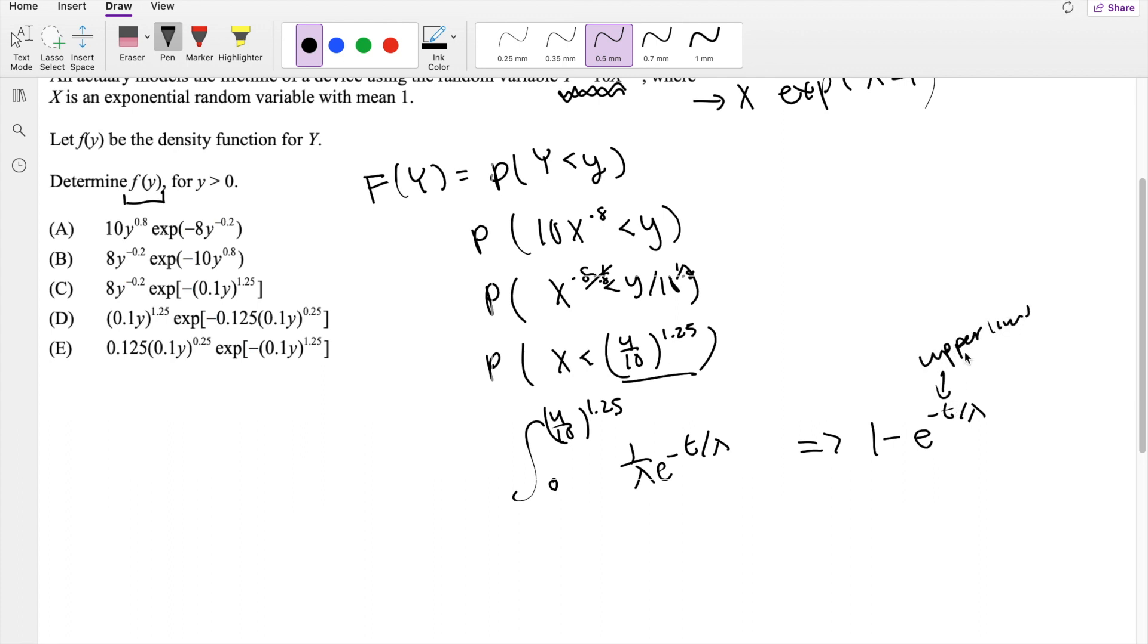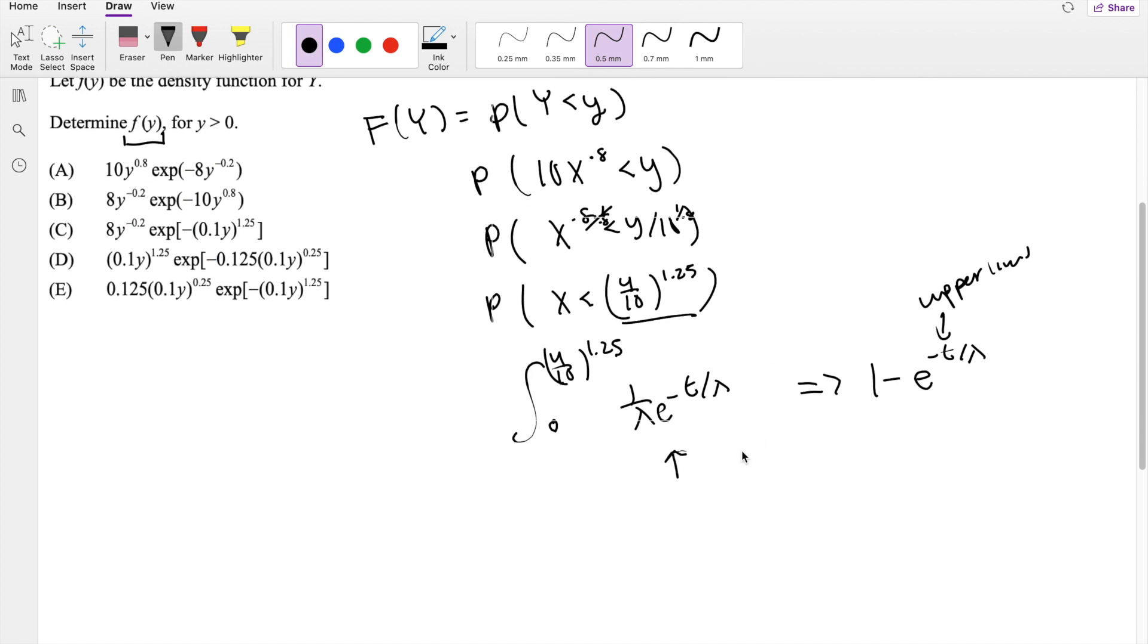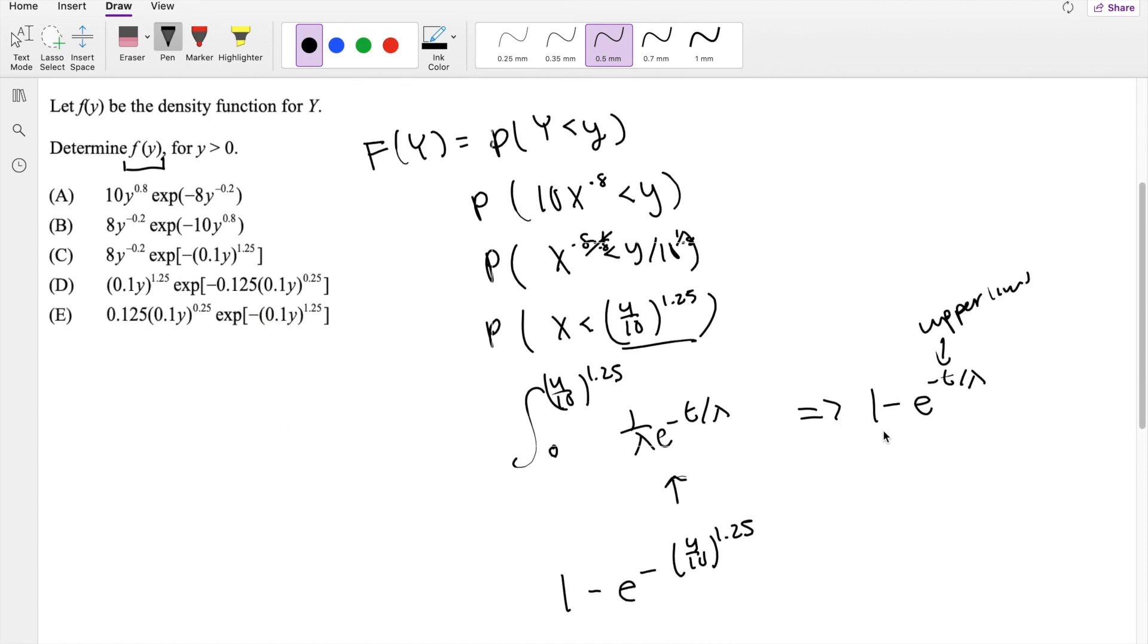So we know that CDF is equal to 1 minus e to the negative t over lambda, where t is the upper limit. So we're going to use that here. 1 minus e to the negative t, which is y over 10 to the 1.25, divided by lambda, where lambda is just 1. So we're just going to leave it as is.